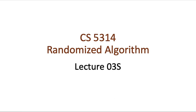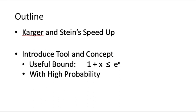This is a supplementary lecture of lecture 3. Here, we will look at Karger and Stein's speedup on the randomized min-cut algorithm we have introduced just now. But before that, we are going to introduce a useful bound, 1 plus x is less than or equal to e to the power of x, which holds for all real values of x. And then we will also introduce a concept called 'with high probability', which we want our randomized algorithm to hold in order to claim that it works in most cases.